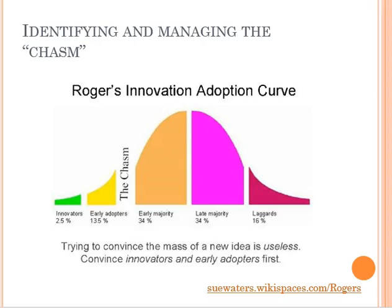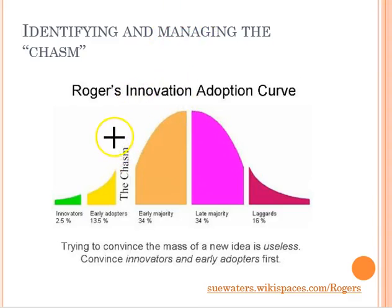I found this graphic by Sue Waters to be an interesting way of talking about the diffusion and adoption process. From the previous video you'll recognize the categories of innovators, early adopters, etc. What I want you to notice right now is what is referred to as the chasm — this area right in here. The chasm is that point where something goes wrong.